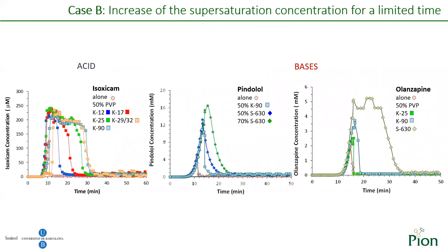Other compounds showing similar behavior are isoxicam, pindolol, and olanzapine. The supersaturation time of isoxicam increases with the degree of polymerization. Although pindolol and olanzapine are bases, the use of Plasdone provokes similar behavior. Again, Plasdone S630 is the one that most changes the supersaturation parameters.